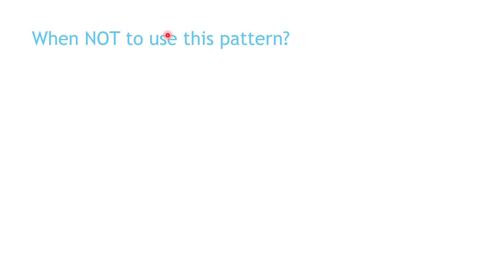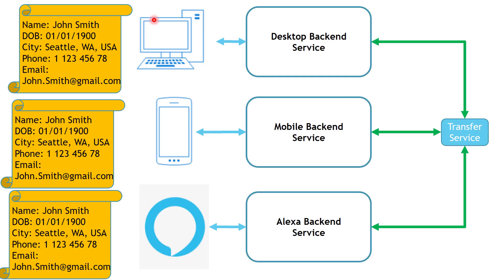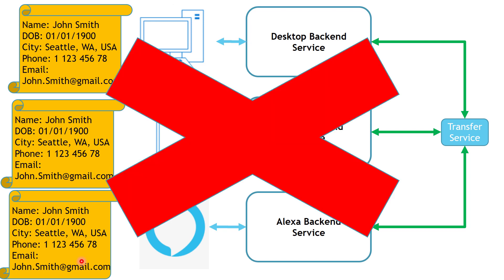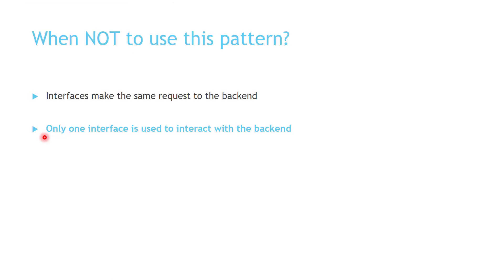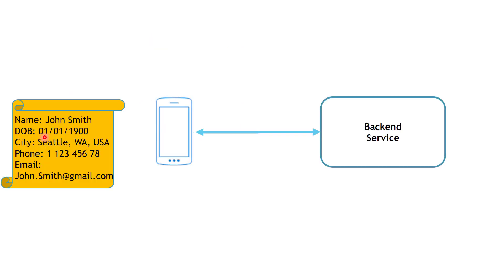Now let's see when you shouldn't use this pattern. Don't use it if all your interfaces are making the same request to the backend. For example, if all frontends are required to display the full profile details, it doesn't make sense to implement this pattern with a separate service per frontend — it makes more sense to have a single general backend service. Also, don't use it when you have only one frontend — if you only have a mobile app with no Alexa skill, no desktop version, and no smartwatch, then you shouldn't use this pattern.